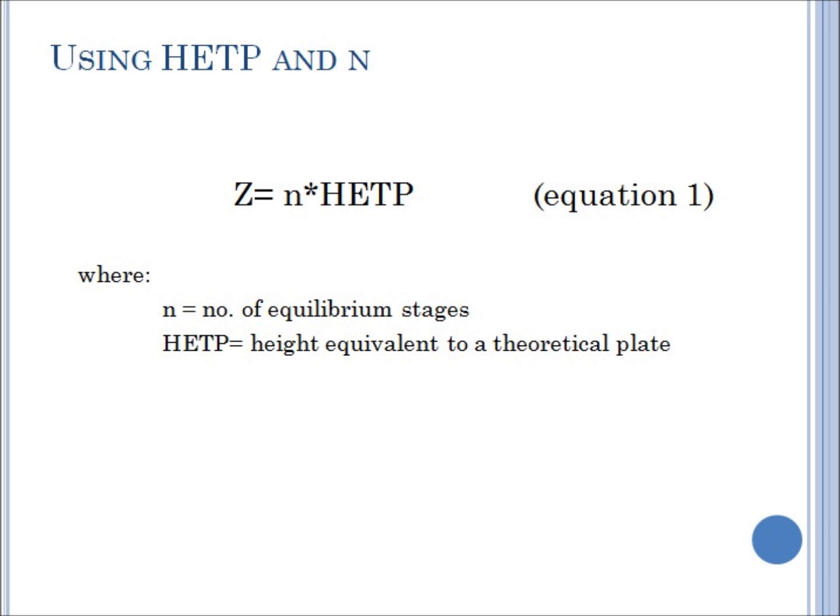Using the next method, Z is computed by multiplying N, the number of equilibrium stages, times the HTP or the height equivalent to a theoretical plate. Thank you.